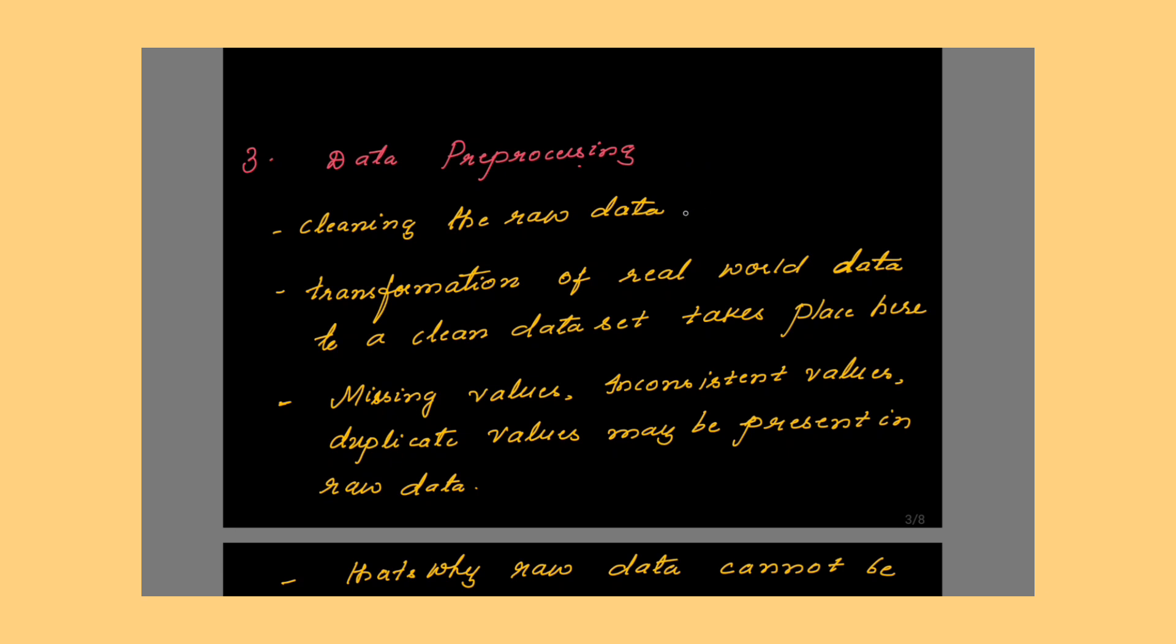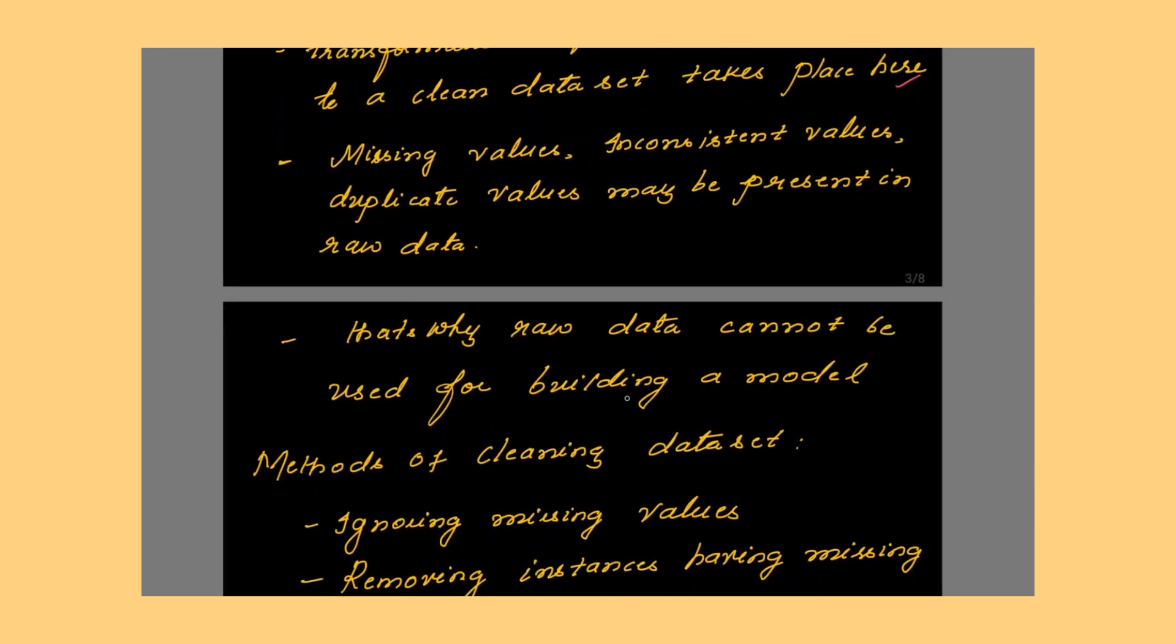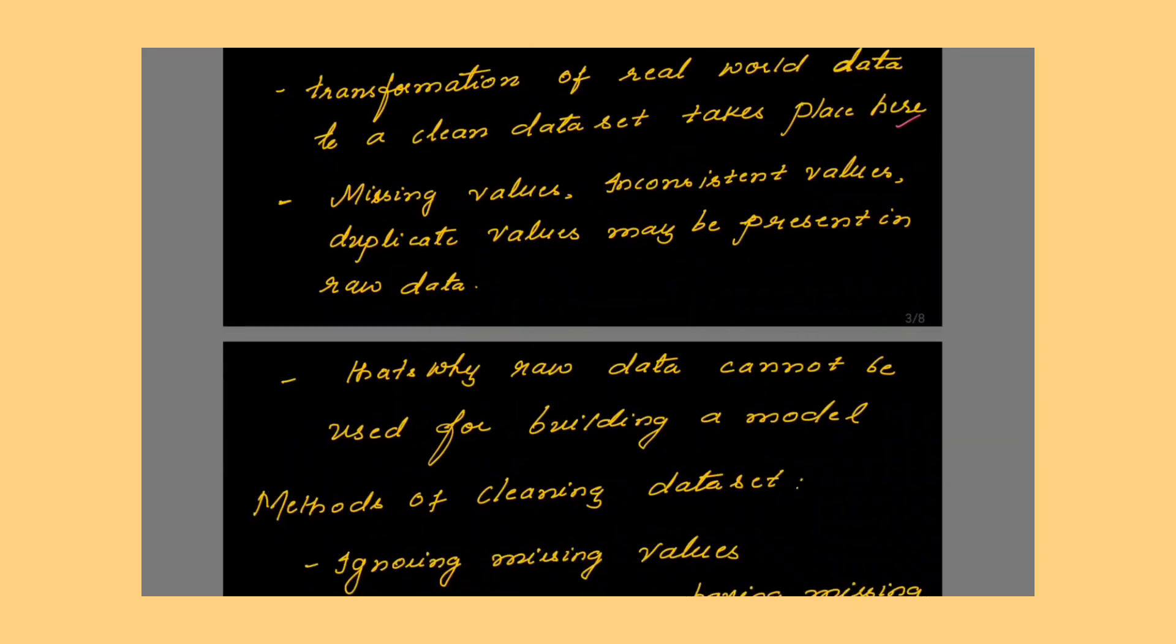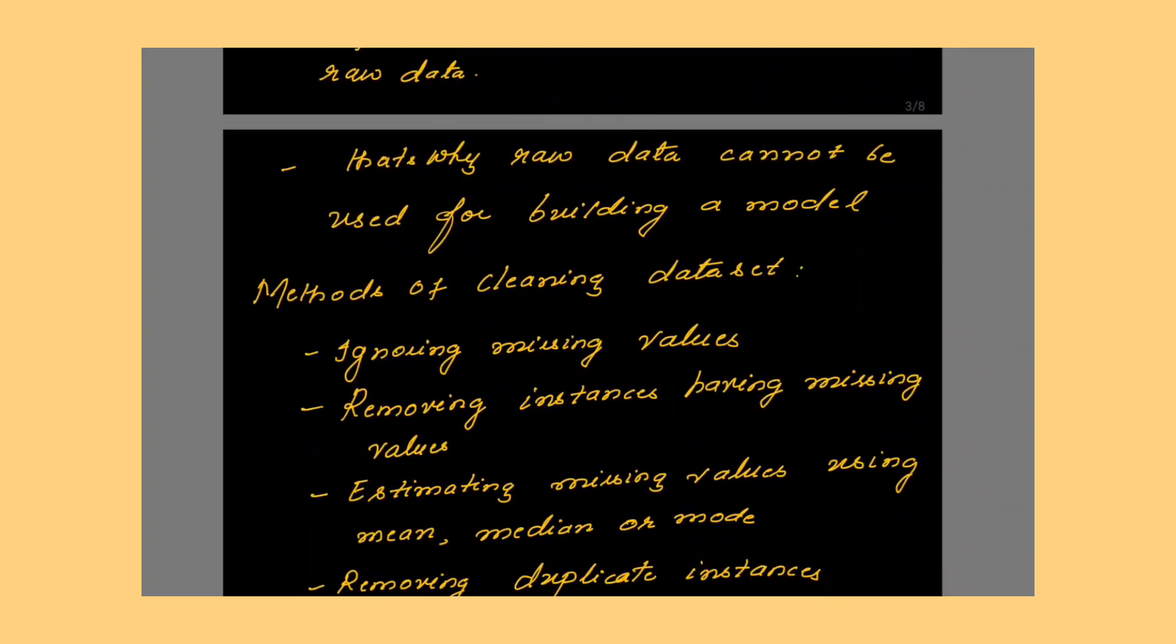Data preprocessing basically involves the following steps: cleaning the raw data, transformation of real world data to a clean dataset takes place here. Missing values, inconsistent values, duplicate values may be present in the raw data. That is why raw data cannot be used for building a model. When you are giving the data to a machine, you have to carry out the transformation of the data.